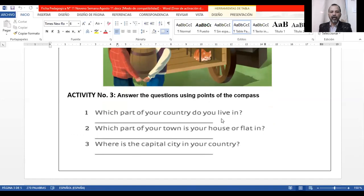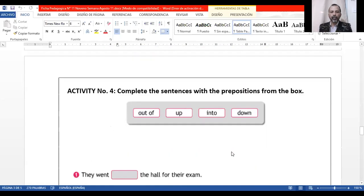Points of the compass. Which part of your country have you been to? Which part of your town is your house or flat in? Flat is apartment. Where is the capital city in your country?